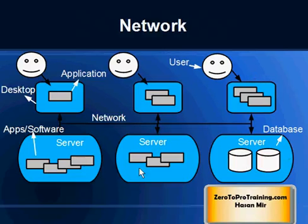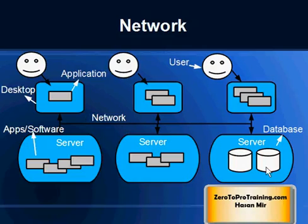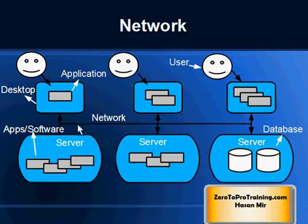All these computers need to be connected to each other. The desktop or laptop users are using is a computer, the server is also a computer, and they need to talk to each other. The application server may need to talk to the database server to manage data, while users run applications on their desktops that may need to interact with application servers and database servers.